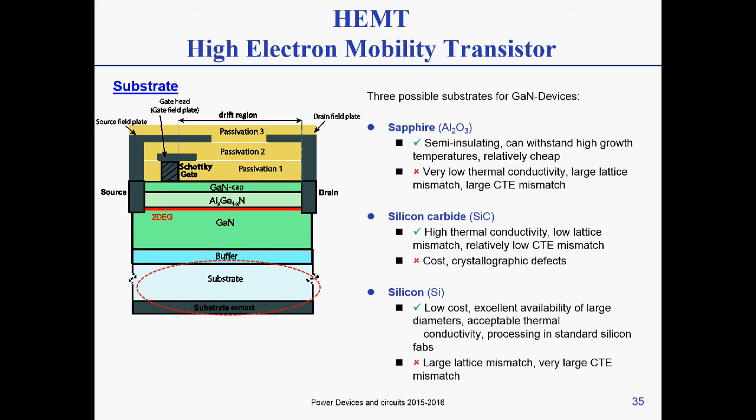For the substrate, we have different possibilities: sapphire, silicon carbide, and silicon. Sapphire is very good because it's semi-insulating, it can withstand high growth temperatures, and it's relatively cheap. However, it has low thermal conductivity and large lattice mismatch, which means that the mismatch in the thermal expansion coefficient can create issues within the GaN layer.